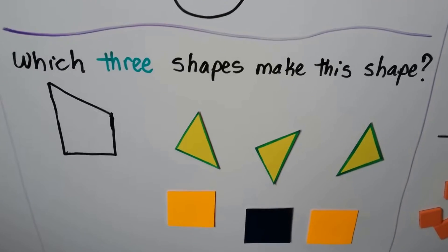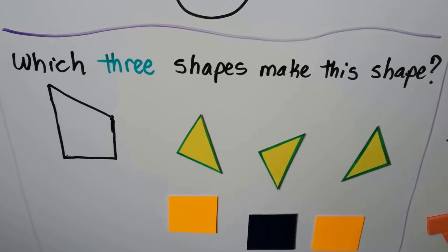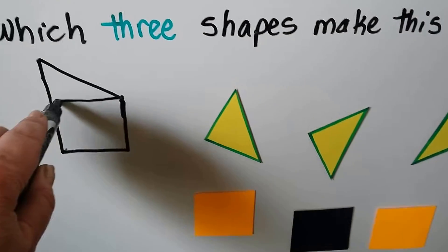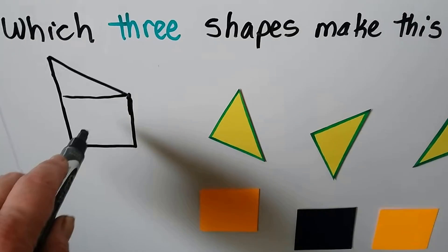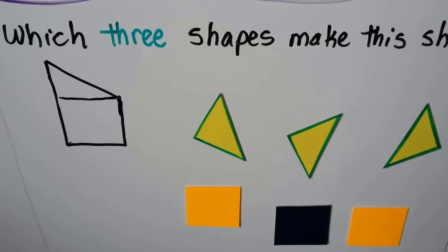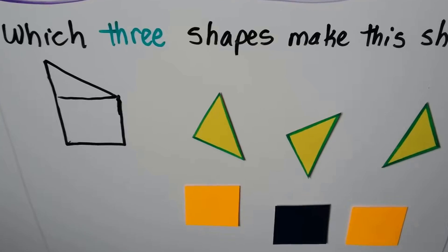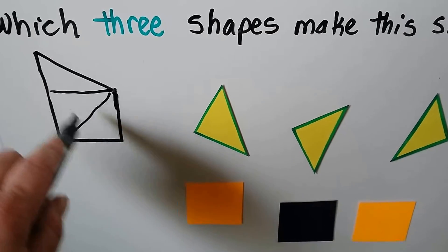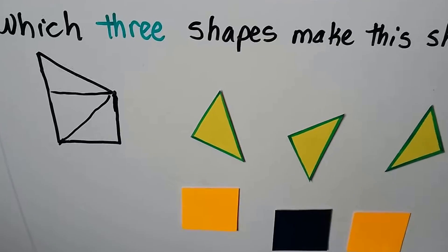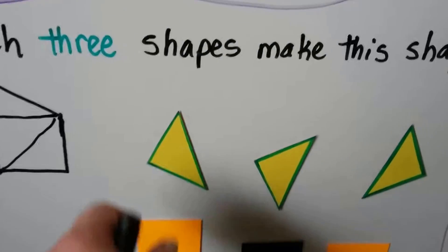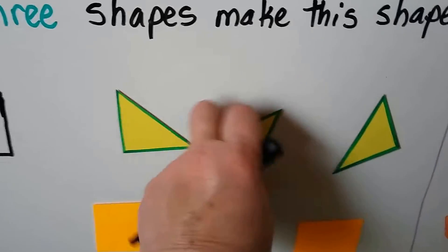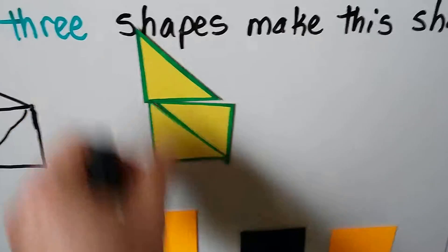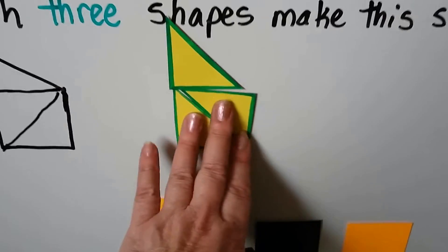Which three shapes make this shape? We could draw a line here, and I see a triangle and a square, but it wants three shapes. If we split the square into two triangles, then we would have three shapes — one, two, three — and we'd make the same shape.